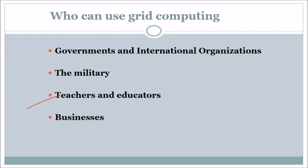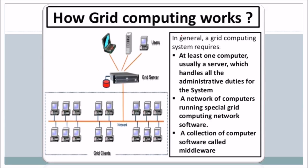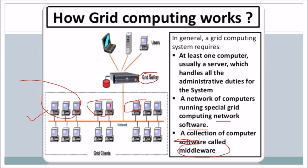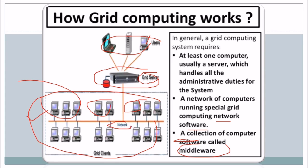Government and international organizations, military, teachers, educators, and businesses all use grid computing. How this works: there is a grid server and a grid of computers running on special grid network software. There is software called middleware. In general, users go to a grid server, which then takes them to the grid clients, which are actually in the network.